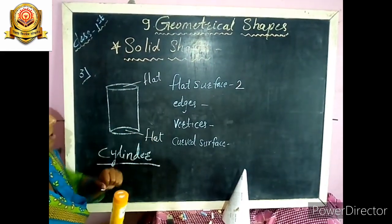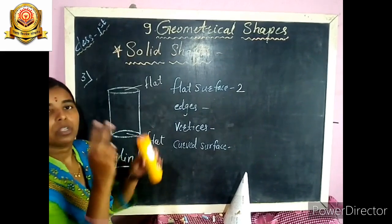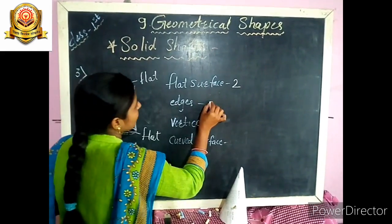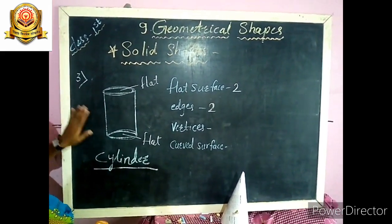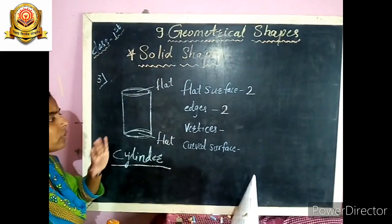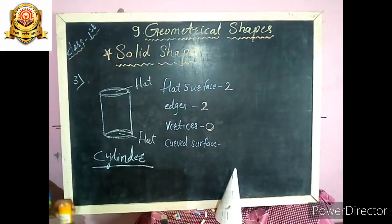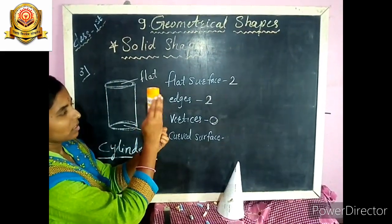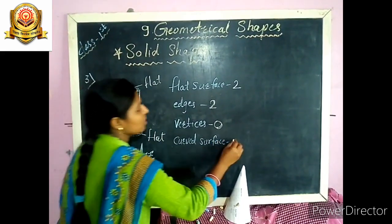And edges — how many edges are there? 1 and 2 — only 2 edges. Cylinder has 2 edges. Does cylinder have any vertices? Any corner? No, cylinder has no corner — cylinder has no vertex, so 0 vertices. And cylinder has 1 curved surface.